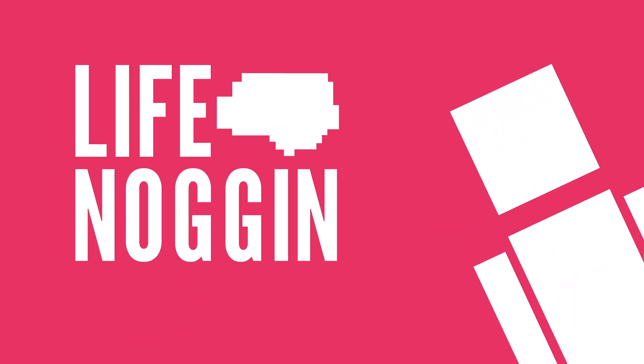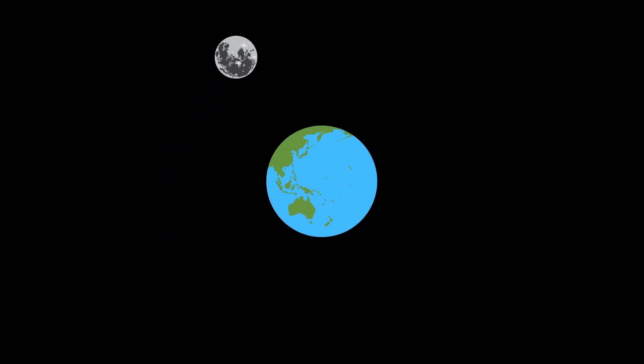Hey there! Welcome to Life Noggin! The moon is our closest celestial neighbor. It's fairly small, has a similar makeup to Earth, and there's water. It might sound like an ideal place to set up camp, but it's really not. So why can't we live on the moon?